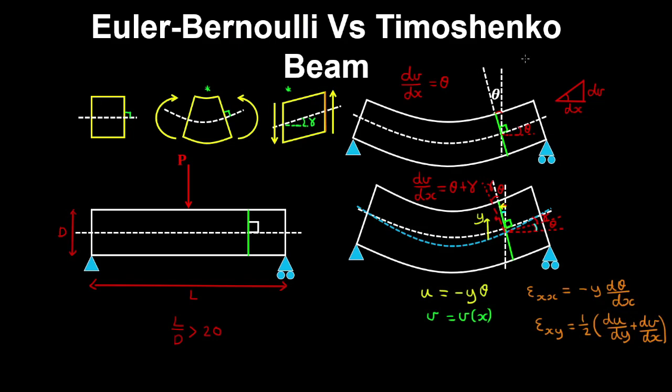So for the Euler-Bernoulli beam, epsilon xy is one half times du dy, which is minus theta, plus dv dx, which is theta. And that's equal to zero. So there's no shear strains in the Euler-Bernoulli beam.